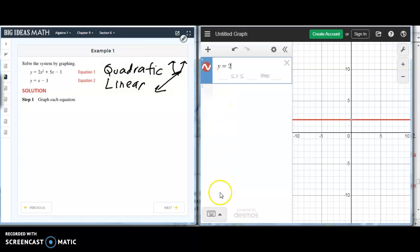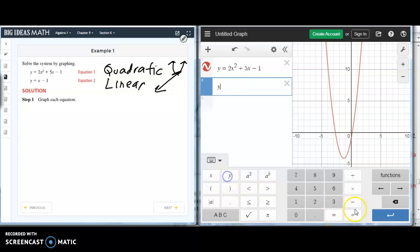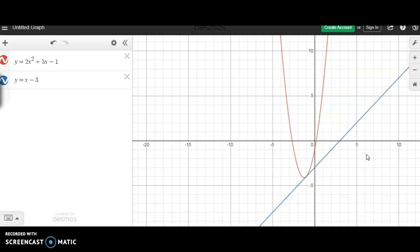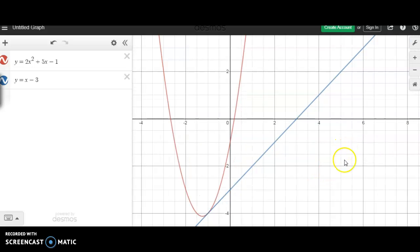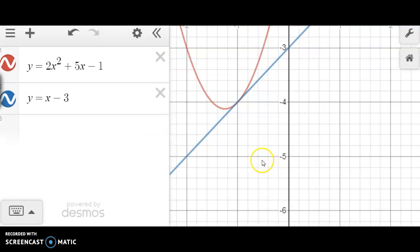So let's graph the first one, y is equal to 2x squared plus 5x minus 1. So we know that this is a parabola facing upward. The second one is y is equal to x minus 3. So let's maximize this one so you can see clearly. So if you zoom in and look at these two graphs, they intersect.